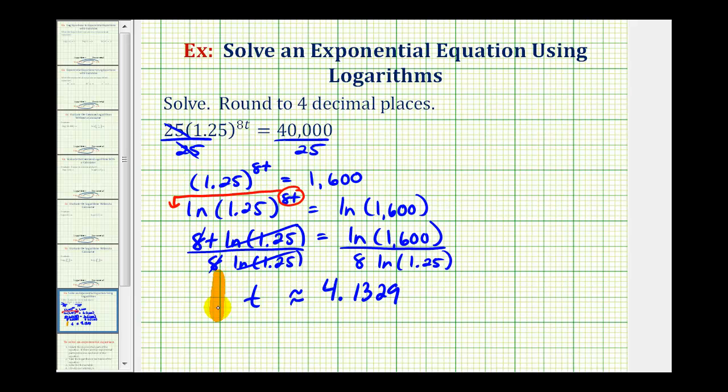So this would be our solution. But if we want to check this, we need to go back up to the original equation. This is telling us that 25 times 1.25 raised to the power of 8 times t, which is approximately 4.1329, is approximately equal to 40,000. It's going to be approximately equal to 40,000 because we did have to round this value, and therefore it is going to be off a little bit.